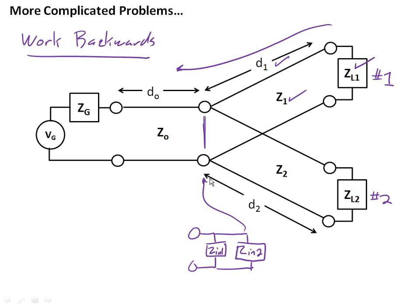Now we have two impedances in parallel. Well, we know the expression for two impedances in parallel, right? And so, basically one over Z, let's call this, what should we call this, Z parallel maybe, is equal to one over Z_in1 plus one over Z_in2.